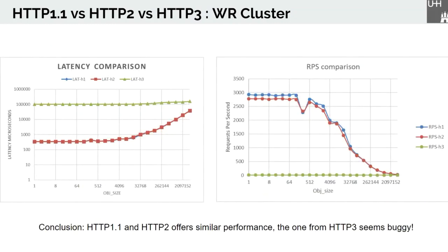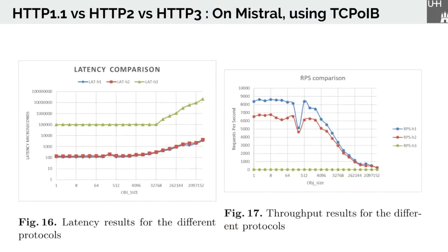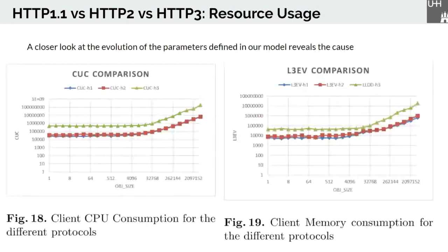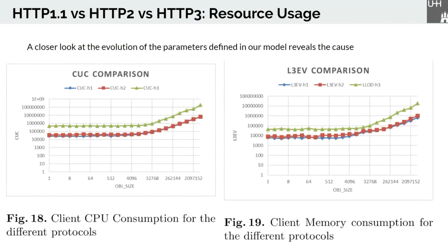And here are the results for latency and throughput. For instance, HTTP/1.1 and HTTP/2 offer similar performance. However, the HTTP/3 implementation seems to be buggy. Let's have a look at the resource usage. Here are the results on Mistral over InfiniBand. We have similar results here. And here we have the resource usage. As you can see, HTTP/1.1 and HTTP/2 have similar resource usage. However, the chosen HTTP/3 implementation is around 10 times more CPU and memory consuming in comparison to the other versions, which clearly indicates implementation immaturity.